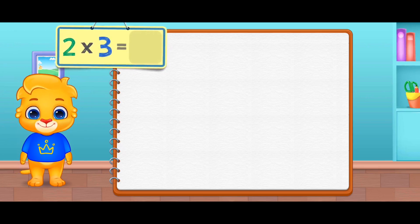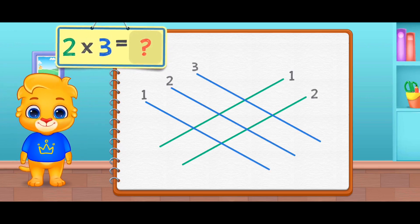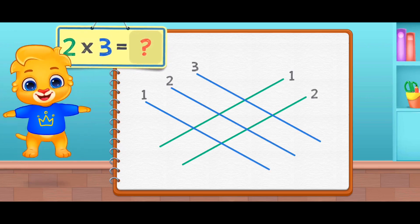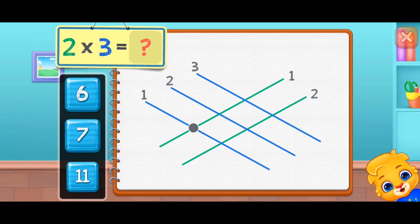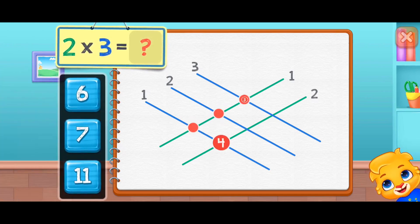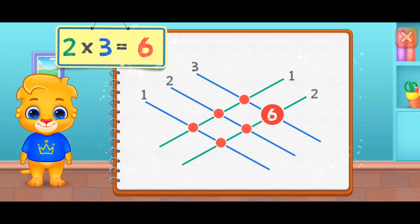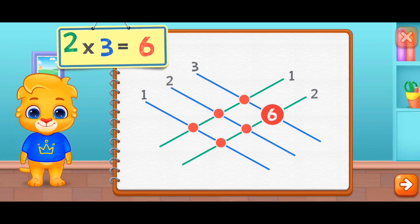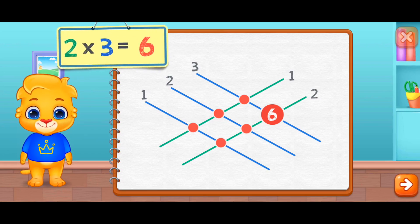Two times three equals — one, two, three, four, five, six. Two times three equals six.